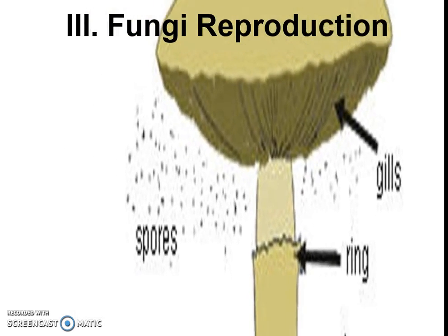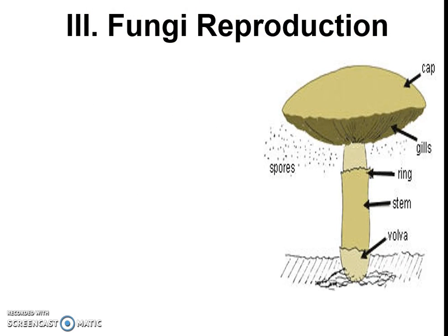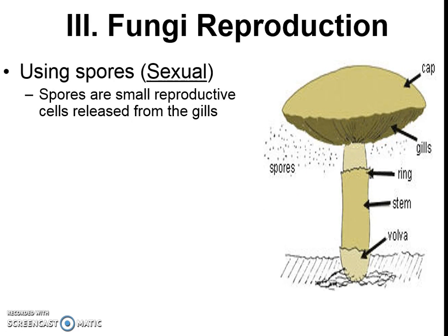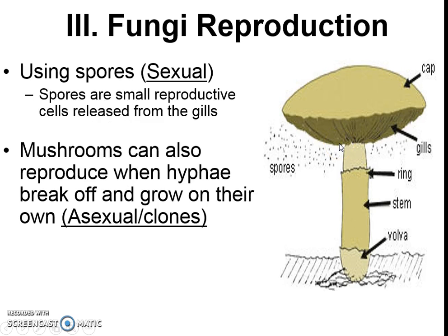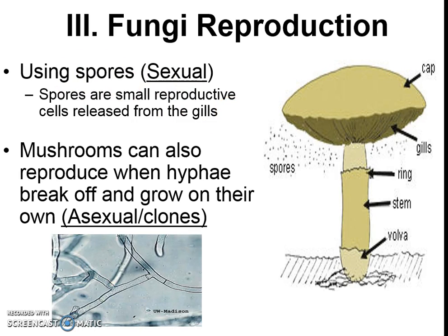So how do fungi reproduce? Here's our basic mushroom-looking fungus — it has a mushroom cap on top and underneath are those gill-like structures. Those gill-like structures can produce spores, and that's sexual reproduction. Those spores are actually the gametes of the fungus and they come out of the gills. Other fungi can have their hyphae accidentally break off and grow clones from that, which we consider asexual reproduction. It is more beneficial diversity-wise for them to reproduce sexually, and they can do both.